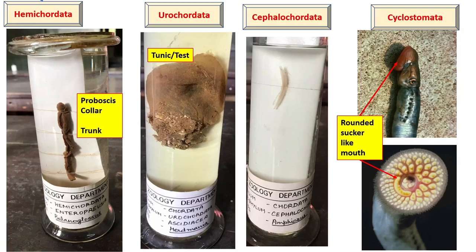Hemichordata. This phylum was previously considered under the Chordata, but later it was shifted into the non-Chordata. Hemichordates are exclusively marine and the body is totally divisible into proboscis, collar, and trunk. A notochord-like structure is found in the roof of the buccal cavity and is called the stomochord. This was the cause of confusion about its position in Chordata versus non-Chordata.